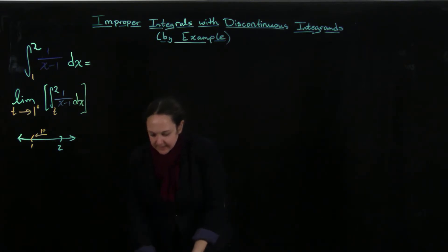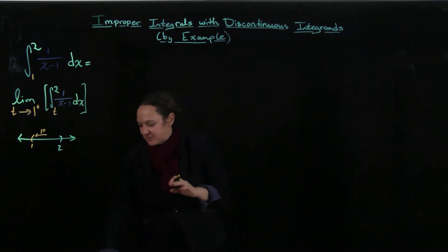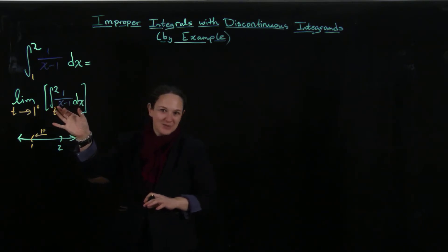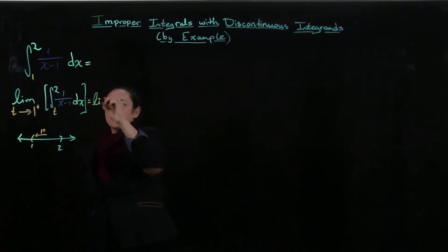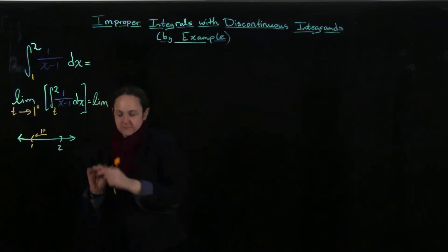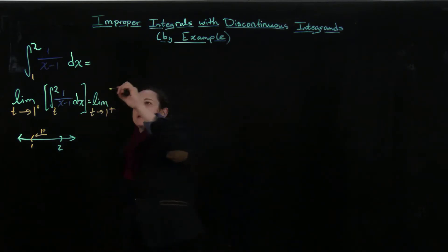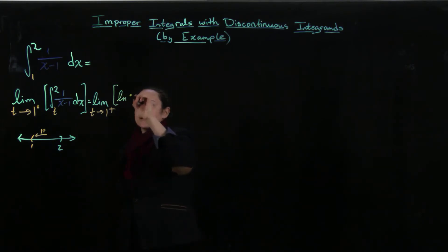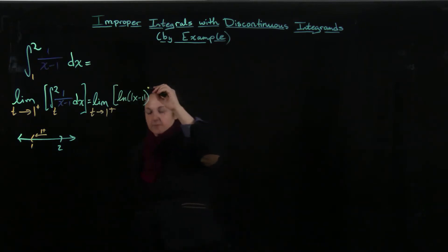This is one of these integrals that I tell students you can't just 'ln-ify,' and this is a rare case where you can. You should properly do a substitution here, but because the derivative of x minus 1 is just 1, it doesn't actually change anything. So this is going to equal the limit as T approaches 1 from the right-hand side, and taking the integral, using a substitution I would get ln|x minus 1|, going from T to 2.